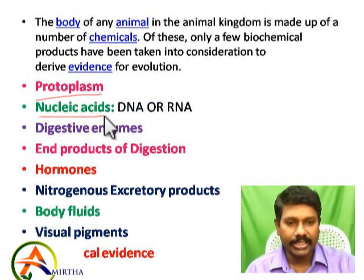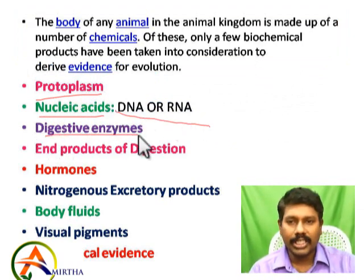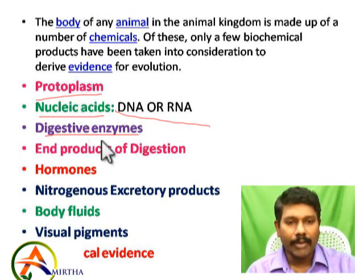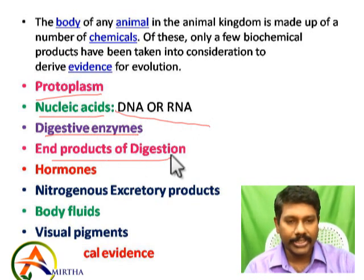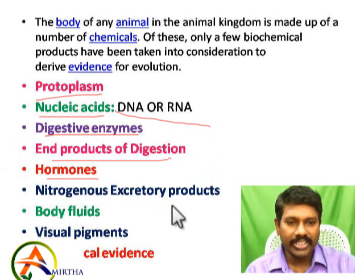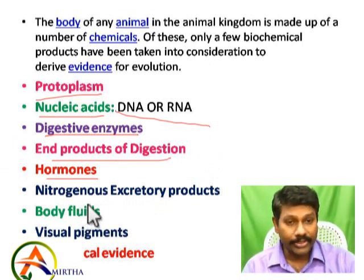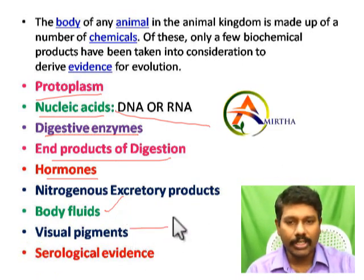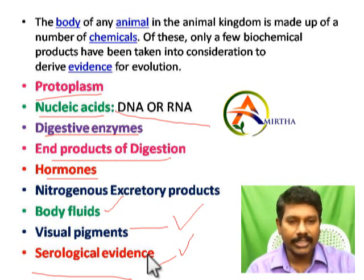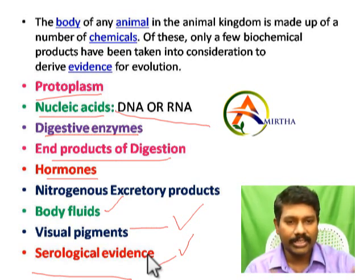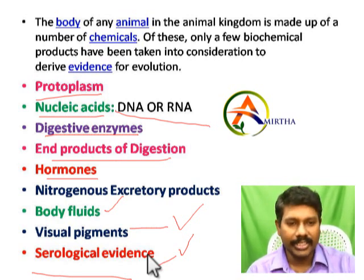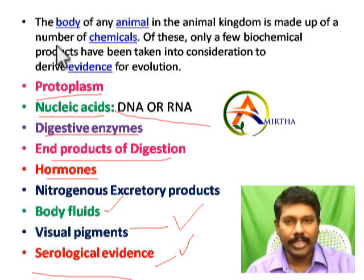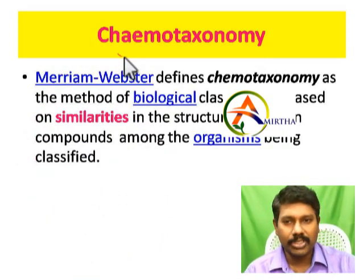Cells of organisms share the same nucleic acids — DNA or RNA. Organisms have digestive enzymes, and the end products of digestion such as amino acids and lipids are the same. Hormones, nitrogenous waste products, body fluids, chemical substances, visual pigments, and serological evidence are all considered. Organisms with similar chemical substances are placed in the same group, while those with differences go into different groups. This is why we talk about hemotaxonomy, as the body of any animal is made up of a number of chemicals.